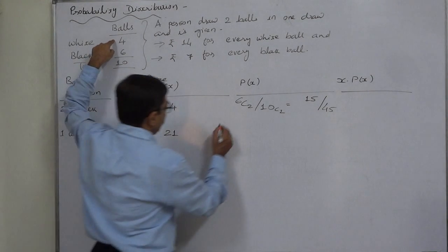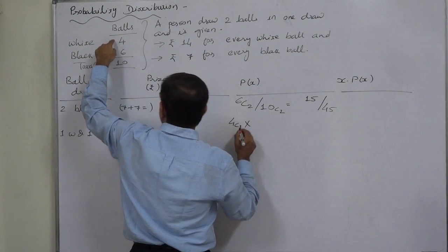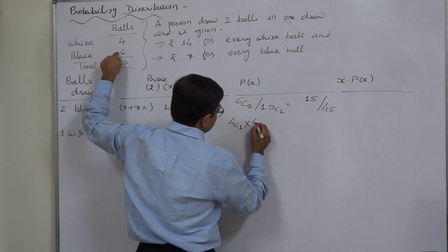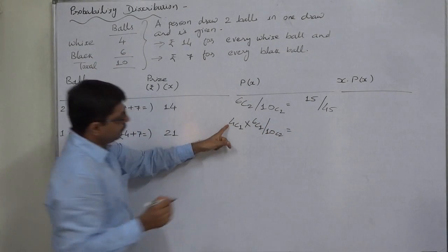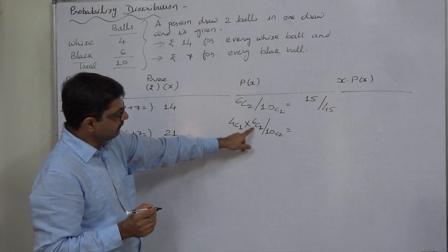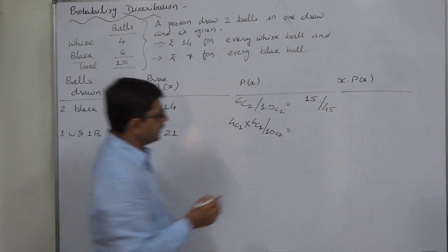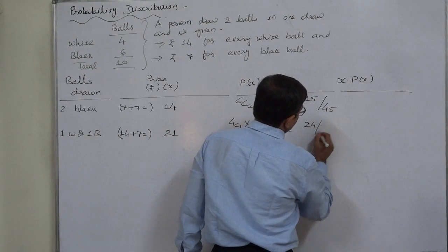1 white out of 4, 4C1, and 1 black out of 6, 6C1, divided by 10C2. 4C1 is 4, 6C1 is 6, 4 into 6 is 24, 24 by 45.